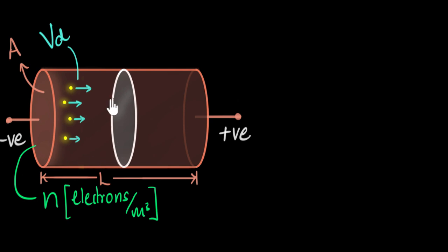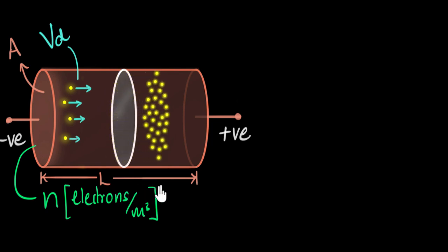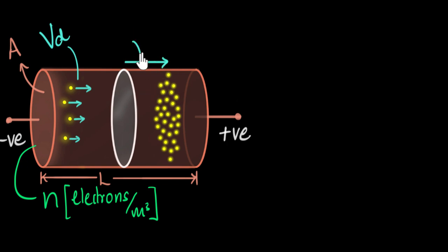Here's how I like to do it. I like to concentrate on the electrons which are very close to this particular area, and a little bit to the left of it. Now all the electrons are drifting towards the right. In one second, where will this electron go? It'll go through that particular area and end up somewhere on the other side. How much distance would it have traveled? Well, I know their velocity is Vd, so in one second it must have traveled Vd amount of distance. That's the definition of velocity — displacement over time. So this distance traveled should be Vd.